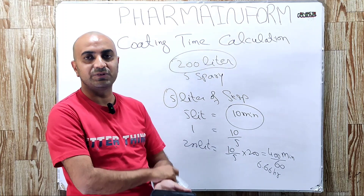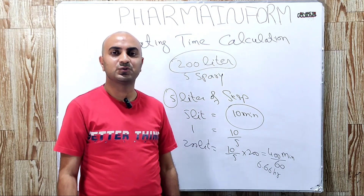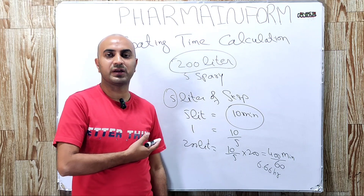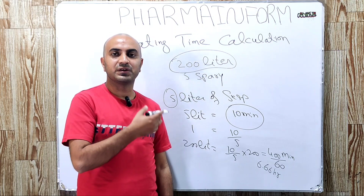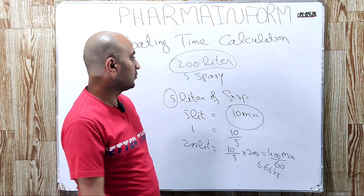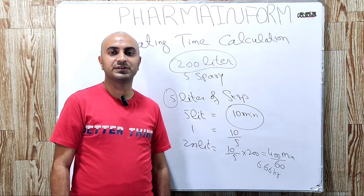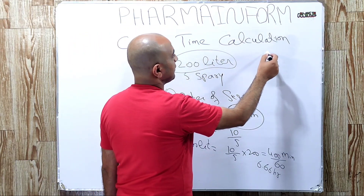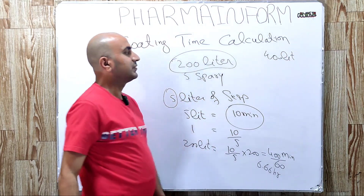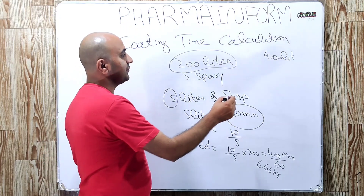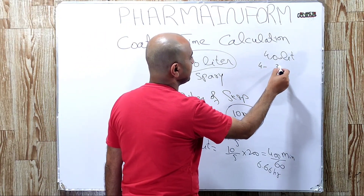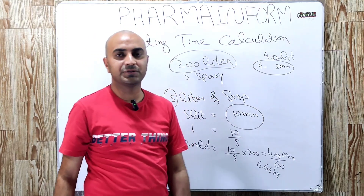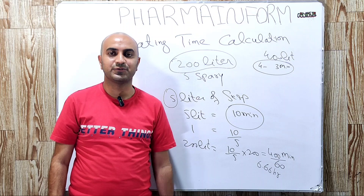I hope you are now familiar with this basic calculation. You can use this method to calculate the coating time for all your products and in this way create data to easily define the coating time. If you like the video, share it and visit the website for more articles. Practice question: if 4 liters is finished in 3 minutes, how much time is required to spray 400 liters? Give your answers in the comment box. Allah Hafiz.